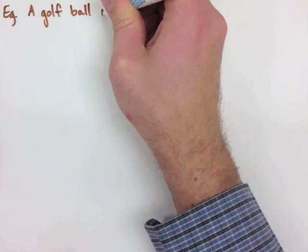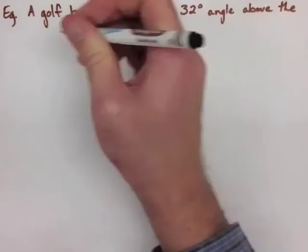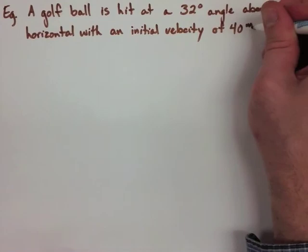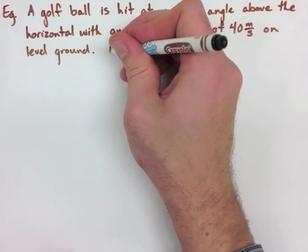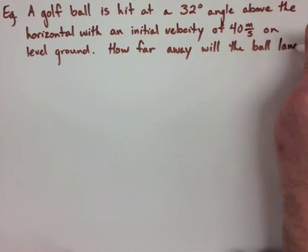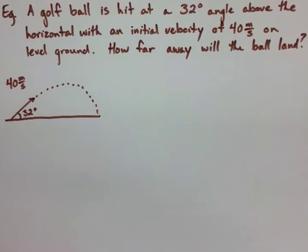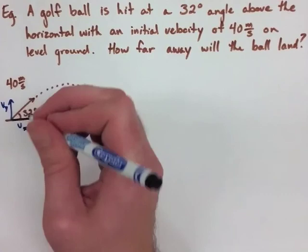We are now going to look at an example that's not on your sheet, so turn your sheet over and copy it down, or try to get the main points of this example. A golf ball is being hit at an angle of 32 degrees above the horizontal with an initial velocity of 40 meters per second. The question is: how far away will the ball land from the golfer? For a question like this, we're going to draw a diagram and label as many things as we can. We know there's an x and a y component to this velocity.